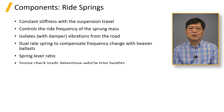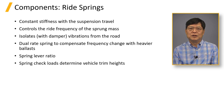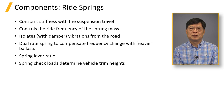Spring preload, spring check load, or free length determine the vehicle trim height. The vehicle would sit high if spring preload were higher than the requirement. In this case, the suspension has more jounce travel but less rebound travel than the design.